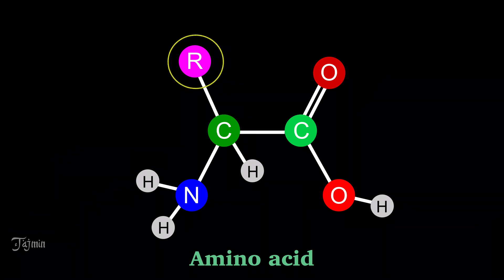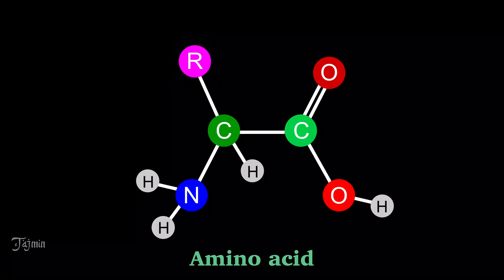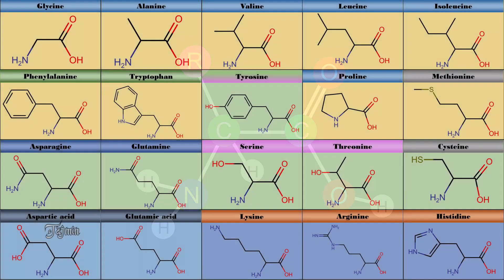The fourth position on C-alpha is occupied by a variable R group. Each amino acid has a different R group.